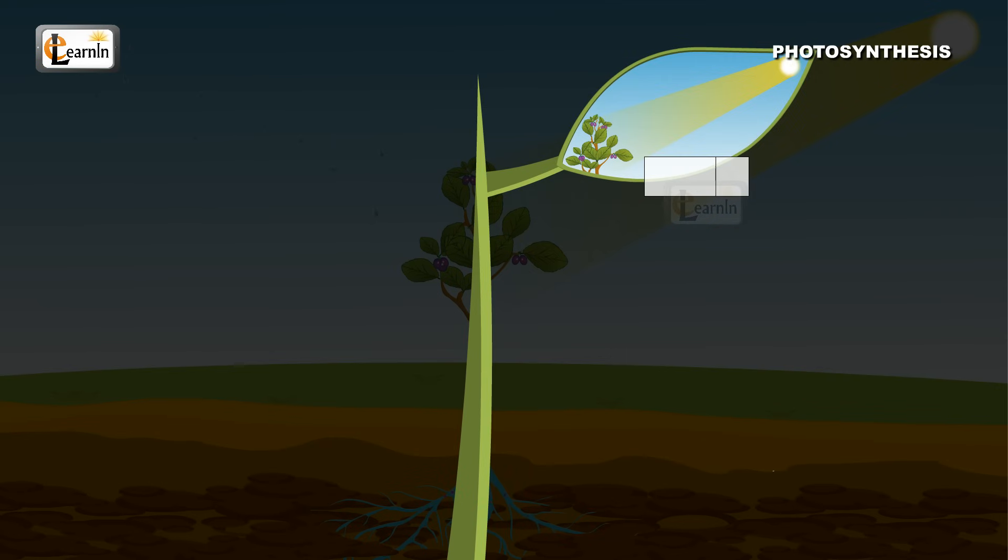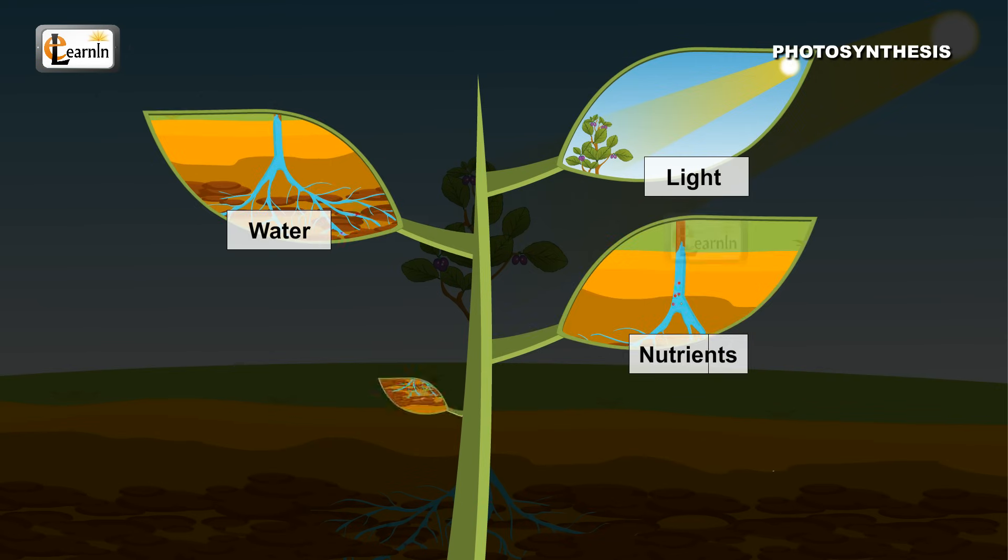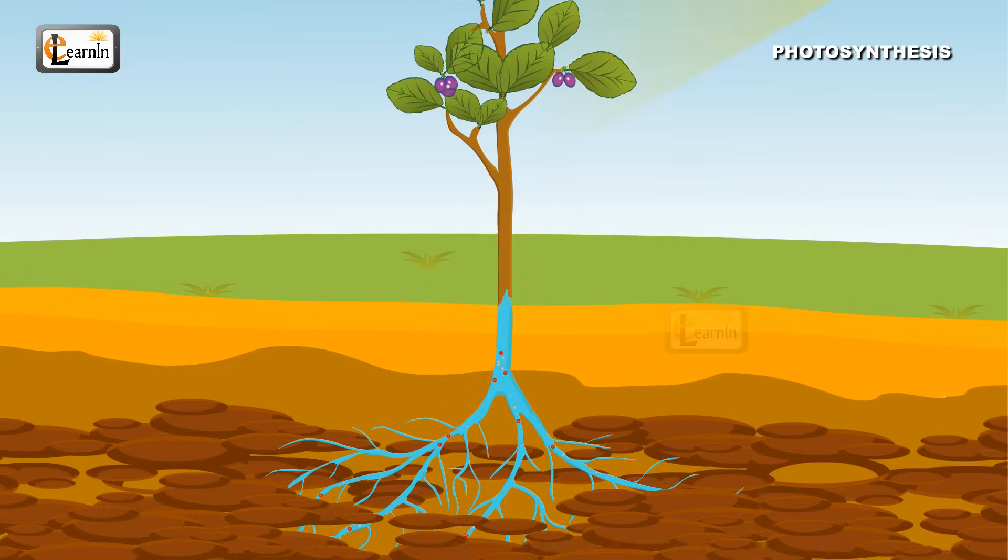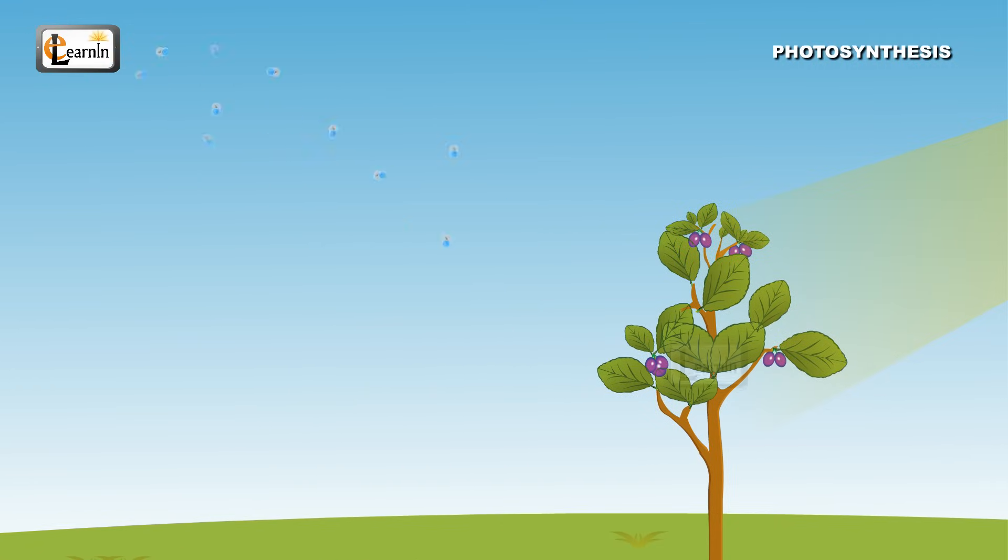Plants need light, water, nutrients, soil, etc. Plants get light from the sun, water from the ground, and carbon dioxide from the air.